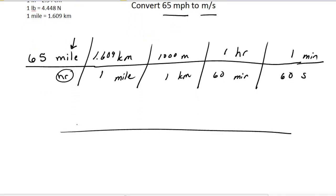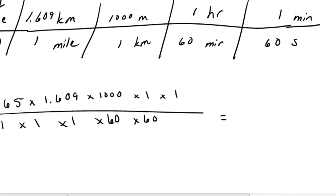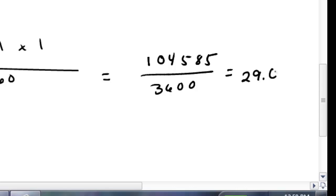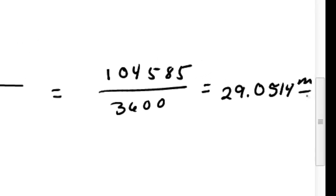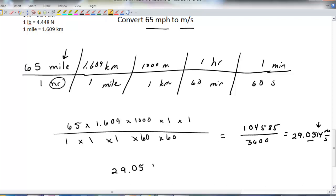Rewriting it so you can see where it's coming from: the numerator is 65 times 1.609 times 1,000 times 1,000 times 1. The denominator — this is inferred — is 1 times 1 times 1 times 1 times 60 times 60. Plugging it into my calculator, that gives 104,585 divided by 3,600, which reduces to 29.0514 meters per second. Looking at those last two digits, the 1 rounds down, so my correct answer is 29.05 meters per second.